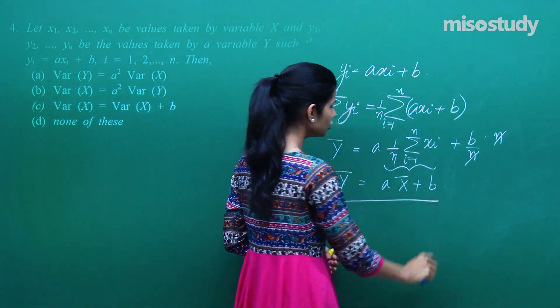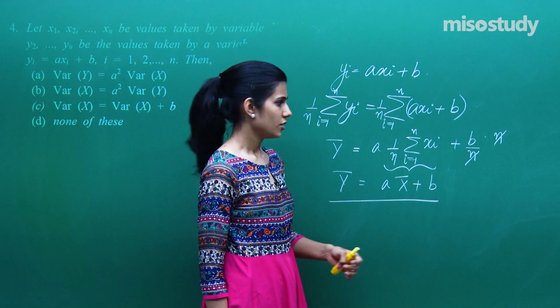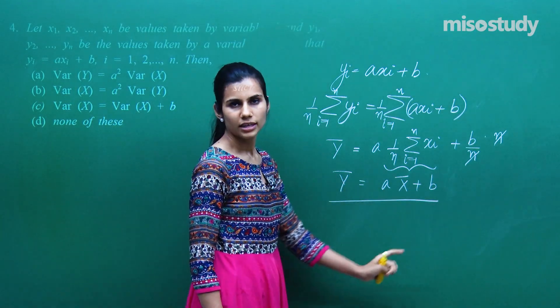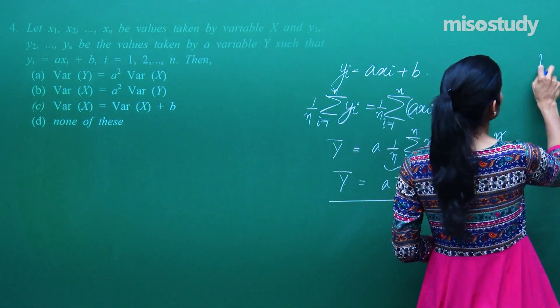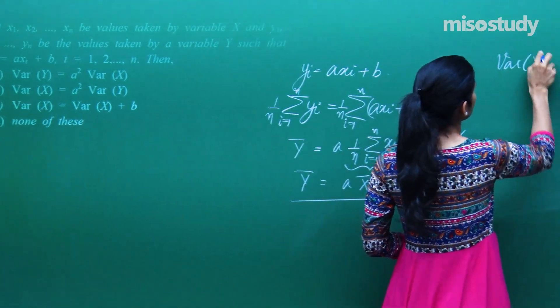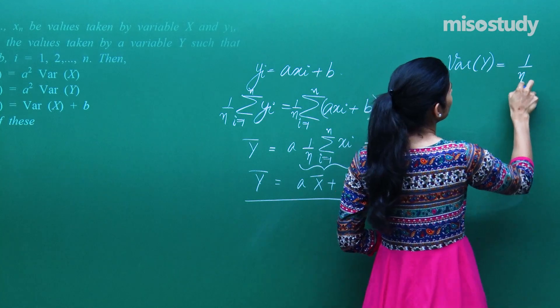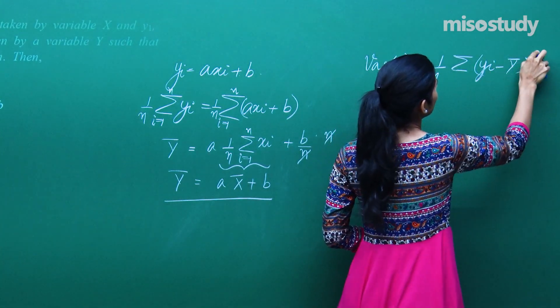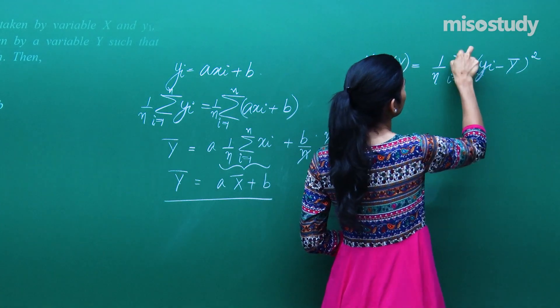So you have relationship between mean or average or arithmetic mean of capital X and capital Y. Arithmetic mean ke beech mein yeh relation hai. Agar mein variance ki baat karo, variance of y, yeh hota hai 1 by n summation yi minus y bar ka whole square, where i varies from 1 to n.